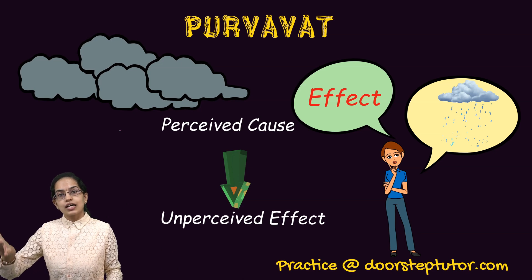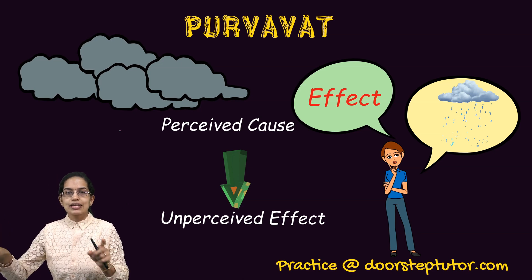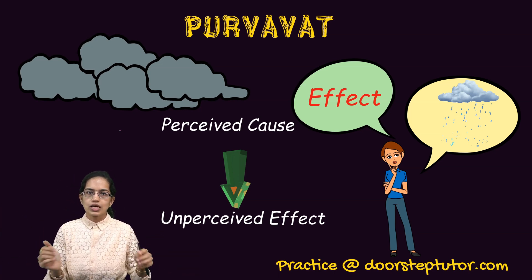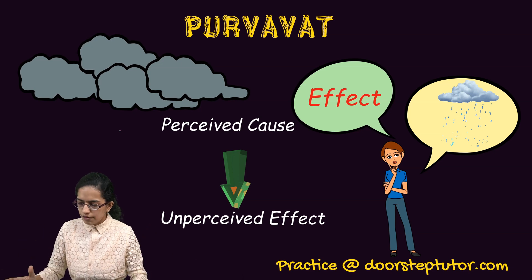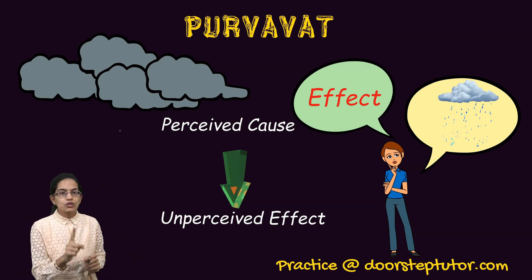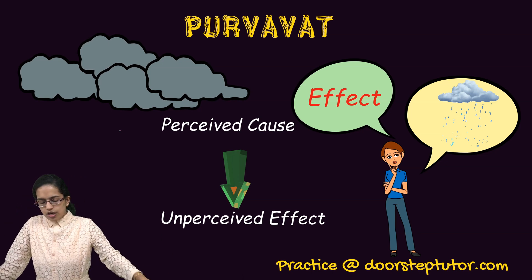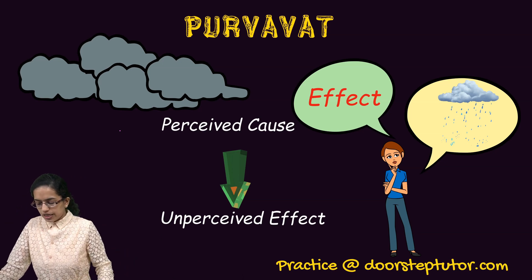We can also say there is a previous antecedent (the cause) and an inference of the consequent (the effect). Similarly, in the example of smoke and fire: from a perceived cause which is fire, you infer an unperceived effect which is smoke — and that is an example of Purvavat.